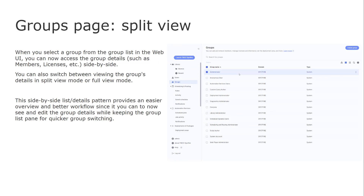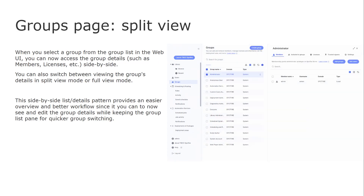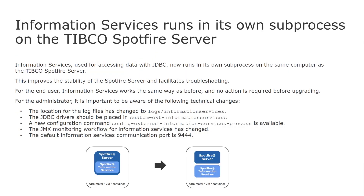This provides an easier overview and better workflow, since you can now see and edit user details while keeping the user list pane for quicker user switching. The very same capability has also been added to groups management. Information services used for accessing data with JDBC can now be run in their own sub-process on the same computer as the Spotfire server, to improve stability and facilitate troubleshooting.